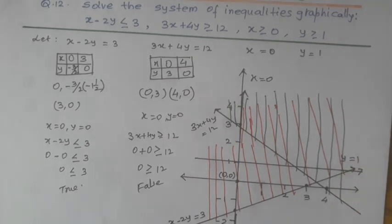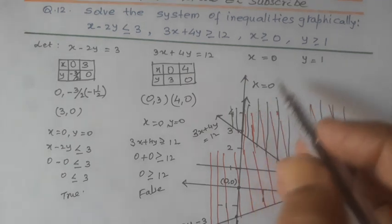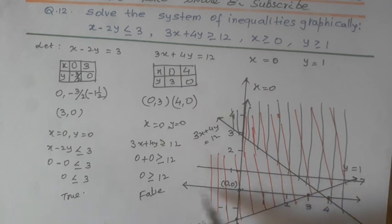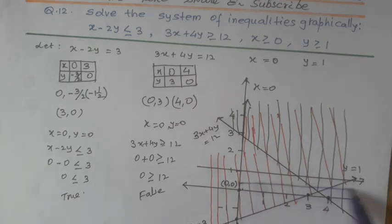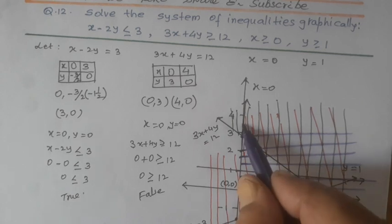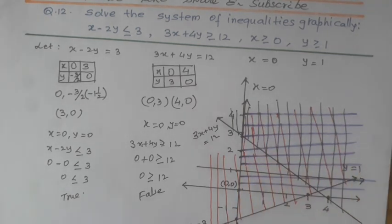Now, x is greater than 0. 0 is here, so greater than means this side, because this side is smaller, this is the negative side. This is positive side. So, we shall draw these lines here like this.